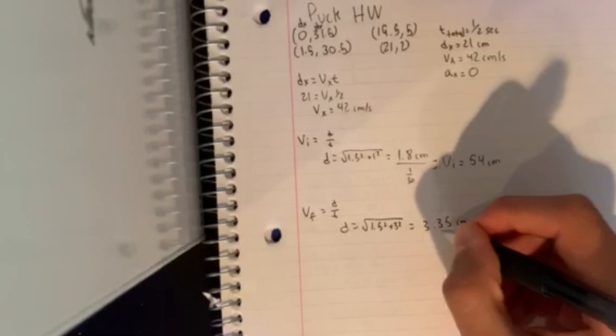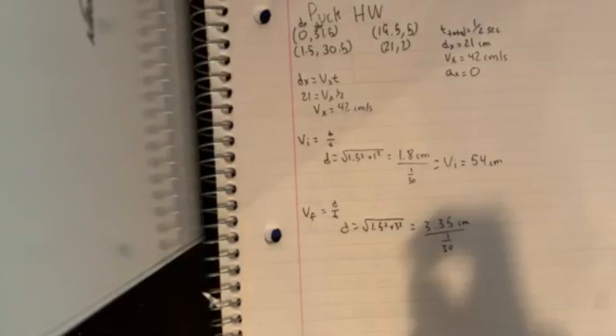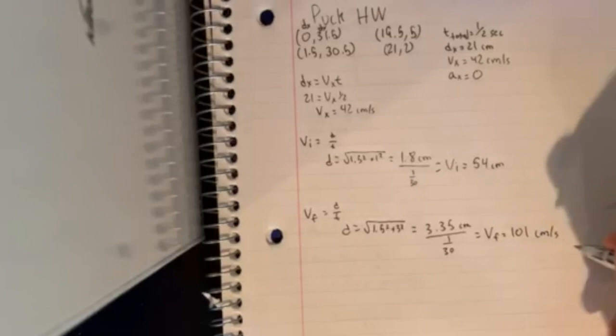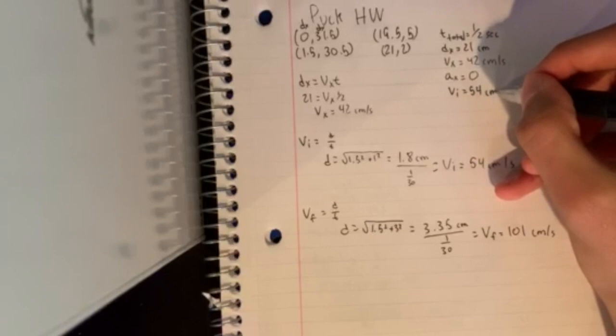Now if we divide that again by 1/30th, because that's the distance between the frames, we get that v-final is equal to 101 centimeters per second. So now we have v-initial equals 54 centimeters per second, and v-final equals 101 centimeters per second.